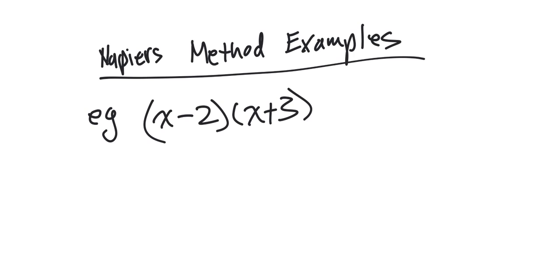Let's say I had x minus 2 times x plus 3. On the side of my paper, I'd have like a little rough page, and then I would make a box.